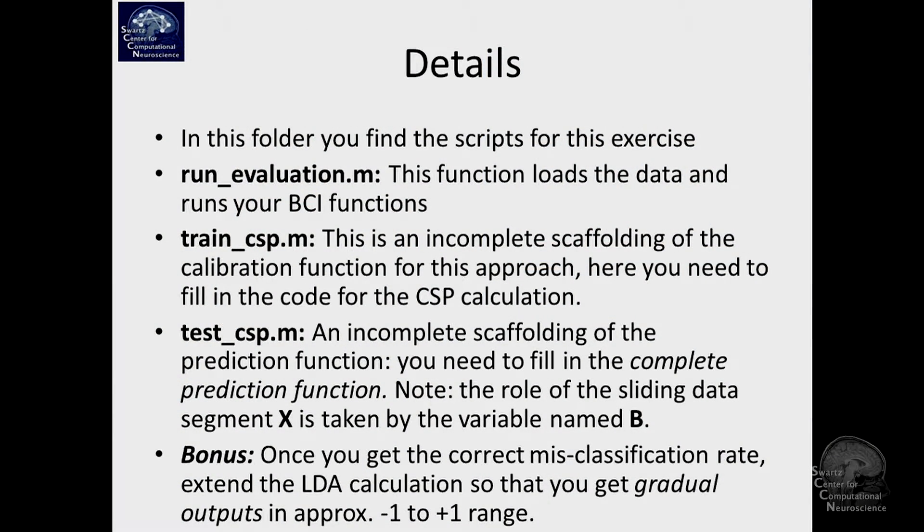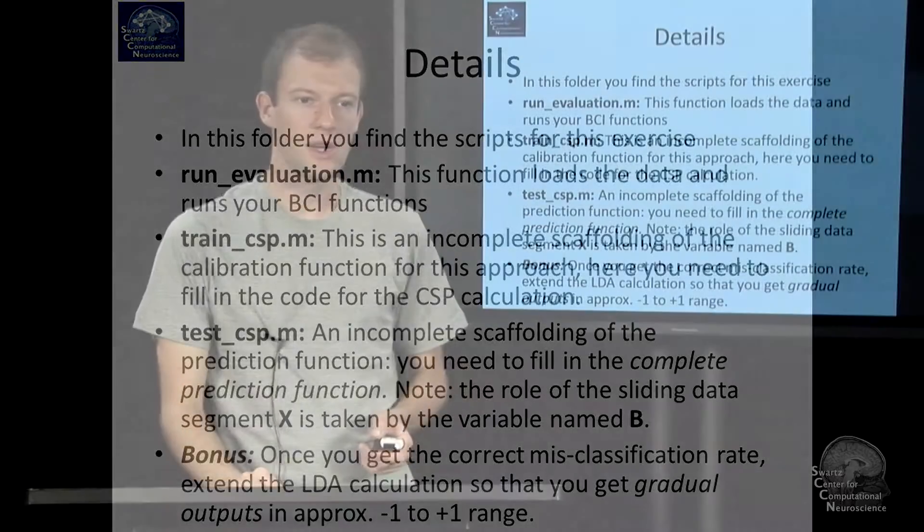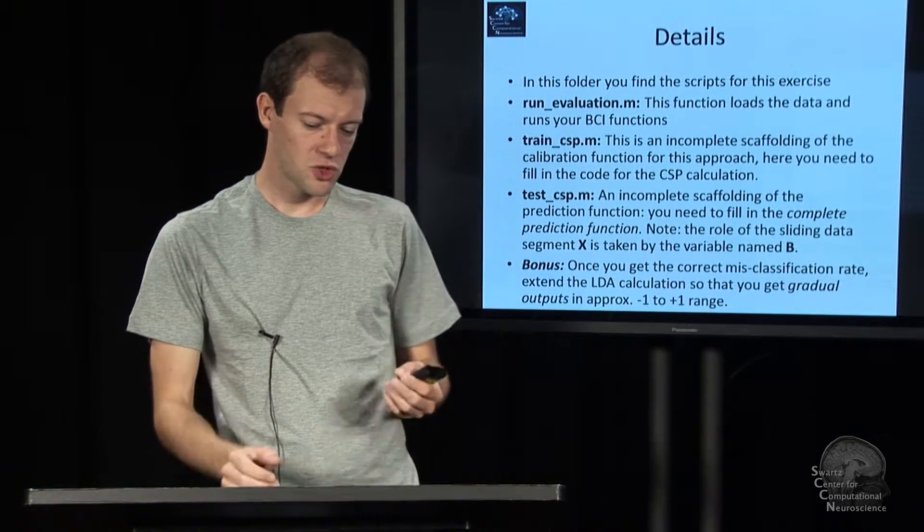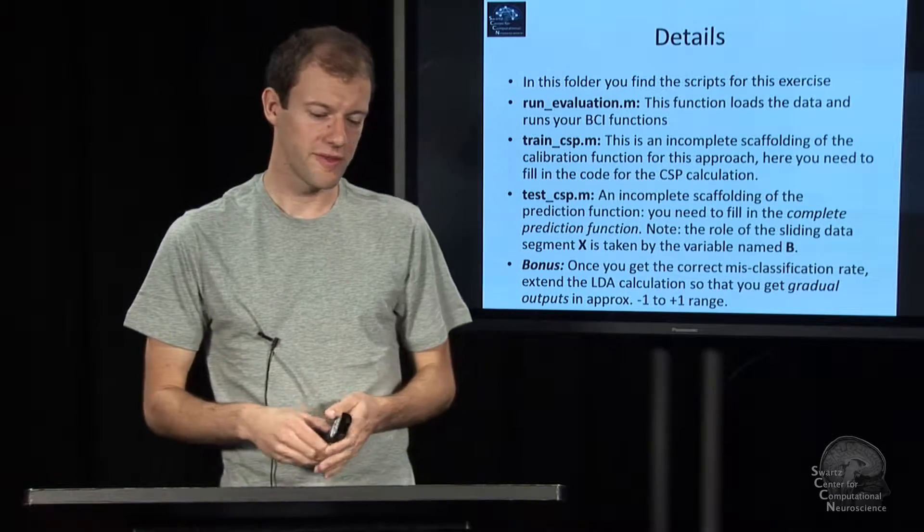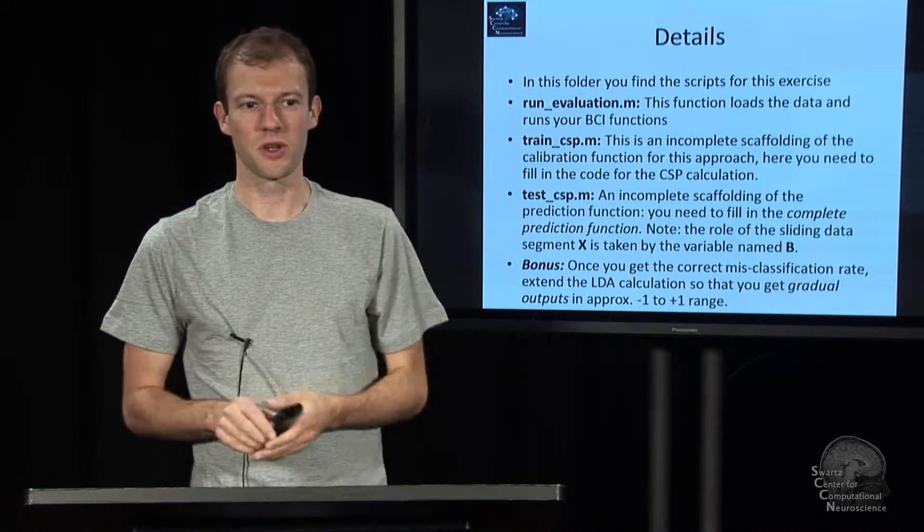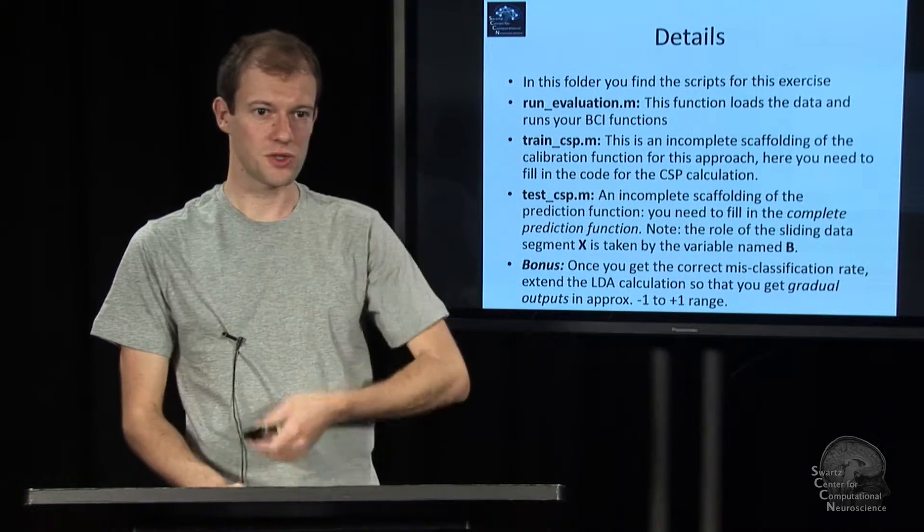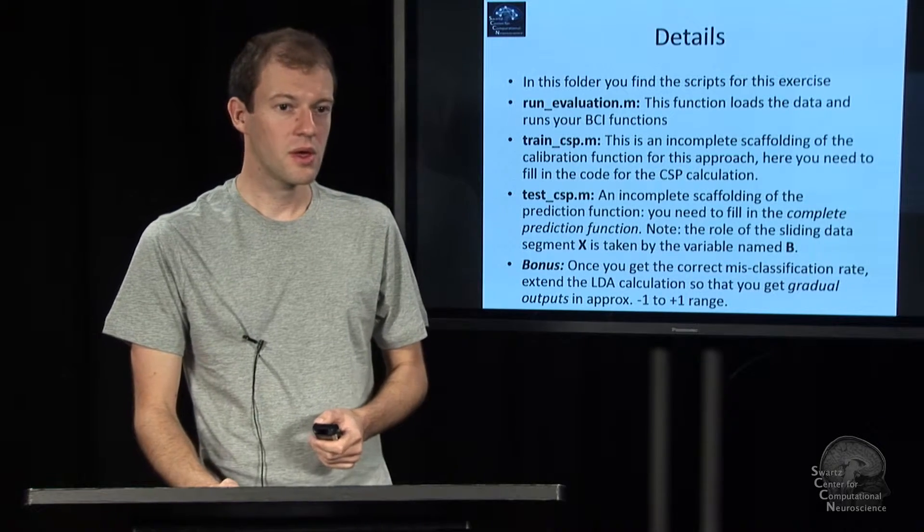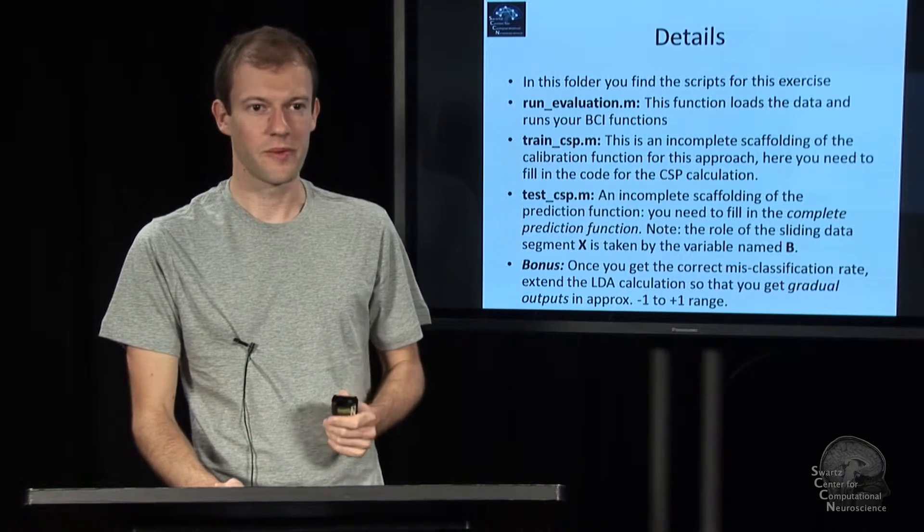And there's one little bonus there: to get actually correct outputs of the online prediction of your BCI, you need to rescale—you need to make sure that what you calculate is a continuous value between minus one and plus one in your prediction function. Otherwise, it will just wildly overshoot. That should be some sort of distance from the hyperplane, of course.